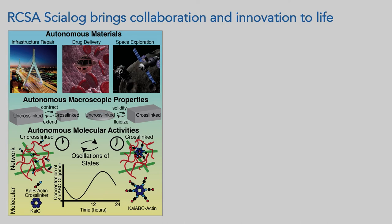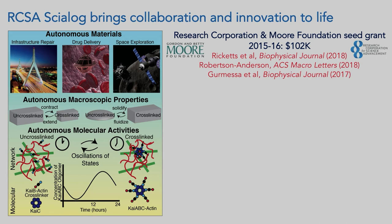We came up with this crazy idea to create a 'creepy crawling material.' If we incorporated circadian oscillators into a cytoskeleton scaffold made with actin and microtubules, the circadian oscillator could cause the material to contract and expand, or soften and stiffen, in a very periodic manner — and if you do this periodically, you could imagine it could crawl. We got seed money through the Sci-Log; the first year we each got about $50,000 to work on this idea, and the second year we applied for more funding and got it because we had made some progress.